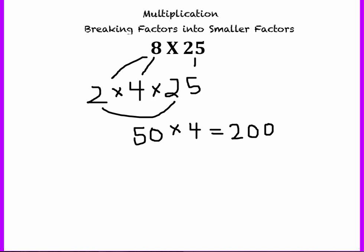Another way the students can do it is to break up the factor 25 into smaller factors. So they could do 8 times 5 times 5. This comes from the number 25. So then they can do 8 times 5, which is 40.